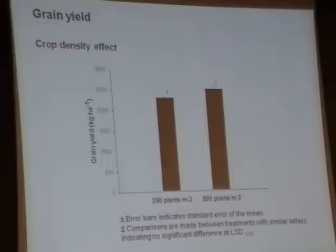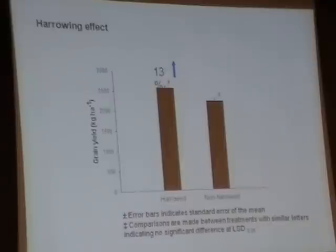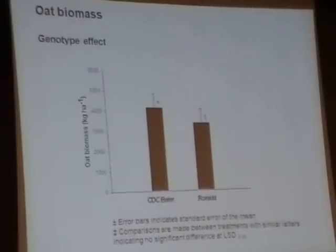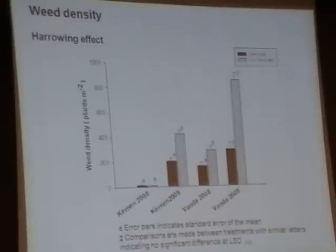I wanted to talk a little bit about Dilshan's Masters work, where we looked at oats and wanted to see how good modifying agronomy was as a weed control tactic. In oats, we looked at seeding rate, cultivar variety choice, row width, and in-crop harrowing. What we found is that grain yield going to a higher density increased yield by 11%, and harrowing increased yield by 13%. A more competitive crop genotype had higher oat biomass. Harrowing worked really well for weed control when there were weeds there — when there weren't weeds, harrowing didn't do anything, which makes obvious sense.